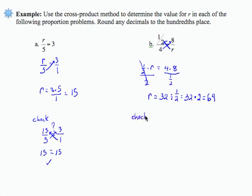Let's do a check. Always do a check. So I have 1 half divided by 4 equals 8 over 64, and that's a question.